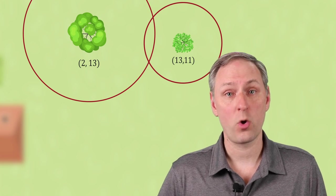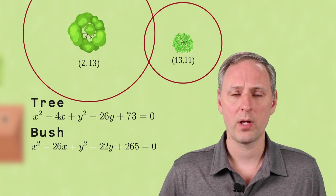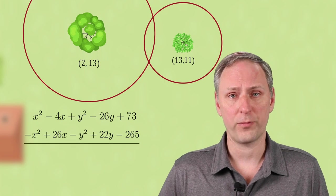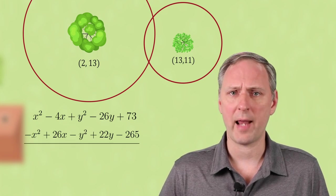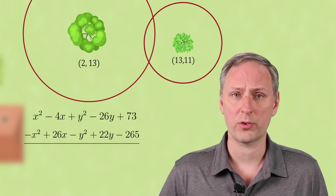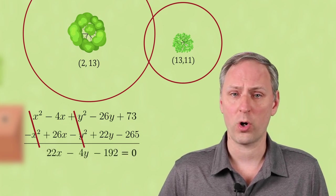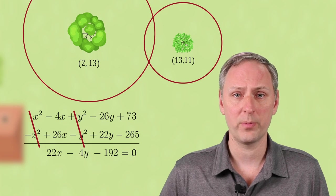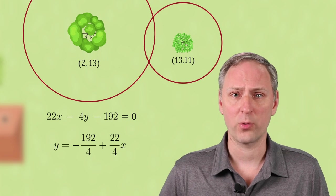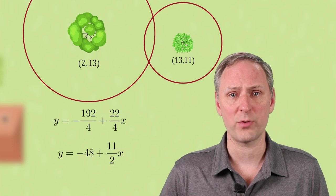We now have two equations, one for the circle around the tree and the other for the circle around the bush. We can subtract the bush equation from the tree equation. We first distribute the negative sign and then add like terms together. In this case the x² and y² terms cancel out and we are left with 22x - 4y - 192 = 0. We can divide everything by 4 and solve for y. This now gives us an equation for y in terms of x.